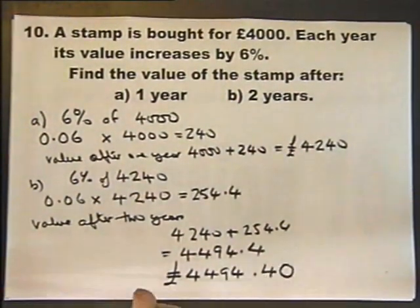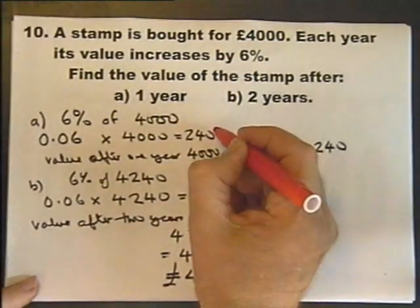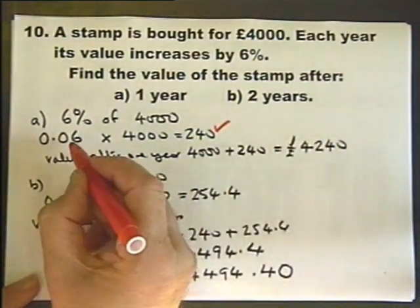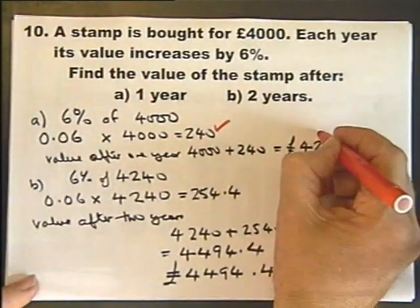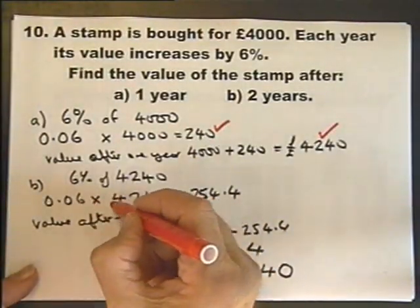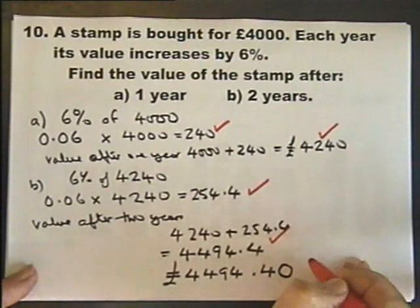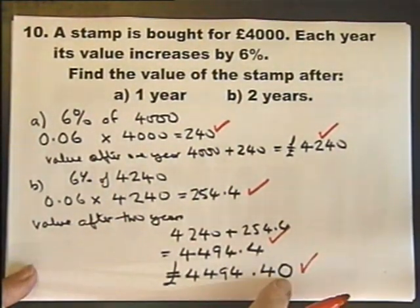Okay, let's see what we've got here. We'll have a mark for working that out, the 6% of the first year, and a mark for the value at the end of the first year. We'll have a mark for working out the 6% of that, and we'll have a mark for adding that on, and then we'll have another mark if you put that zero on.